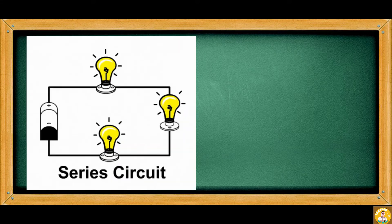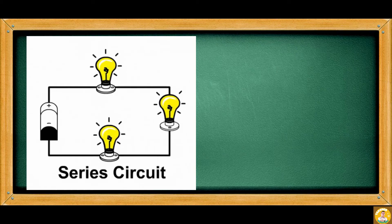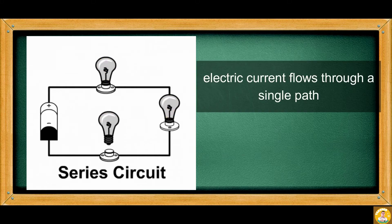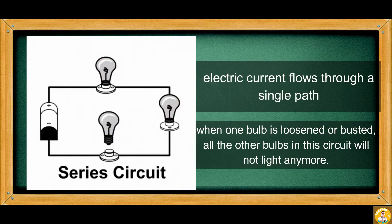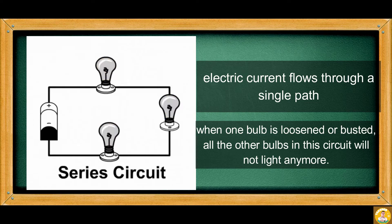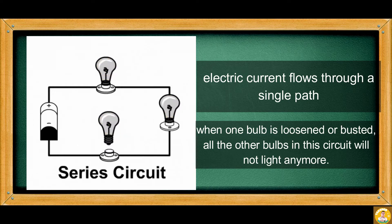Look at the illustrations carefully. Bulbs that are connected one after the other in one chain is an example of a series circuit. In a series circuit, electric current flows through a single path, so if one bulb is loosened or busted, all the other bulbs in the circuit will not light anymore. The loosened or busted bulb breaks or opens the pathway so electricity cannot flow through.